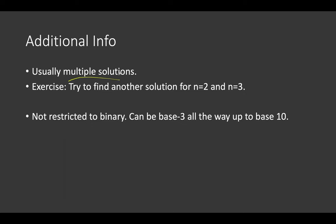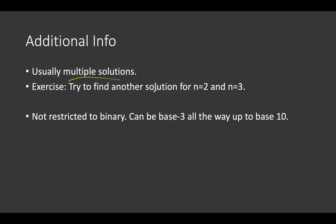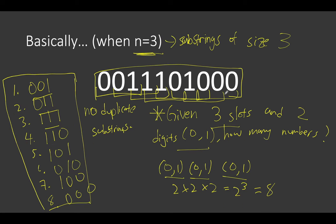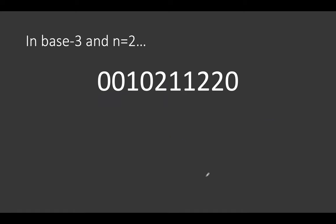Usually there are multiple solutions — meaning there is another string that satisfies these conditions. As an exercise, try to find another solution for n equals 2 and n equals 3. Additionally, De Bruijn sequences are not restricted to binary — not restricted to base 2. We can use base 3, base 4, all the way up to base 10, or even base 36 if we include the alphabet characters A, B, C, as long as we have sufficient characters for each slot.